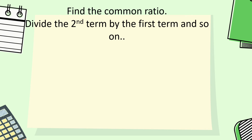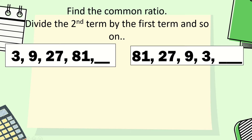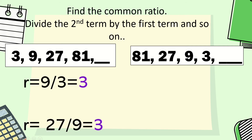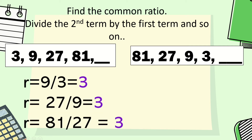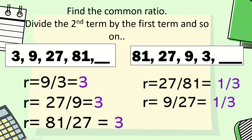To find the common ratio, divide the second term by the first term and so on. For the first example, 3, 9, 27, 81: 9 divided by 3 is 3, 27 divided by 9 is 3, and 81 divided by 27 is also 3, so the common ratio is 3. For the second example, 81, 27, 9, 3: 27 divided by 81 is 1 third, 9 divided by 27 is 1 third, and 3 divided by 9 is 1 third, so the common ratio is 1 third.